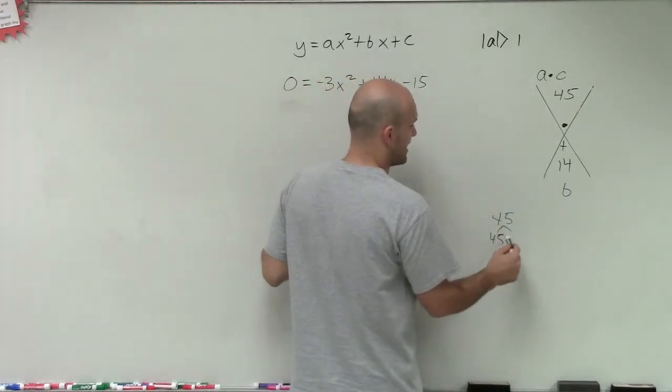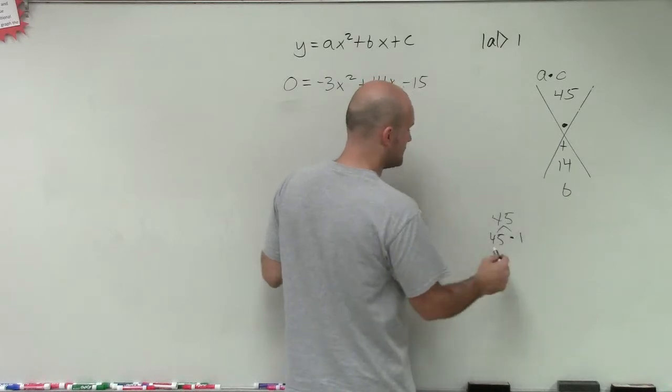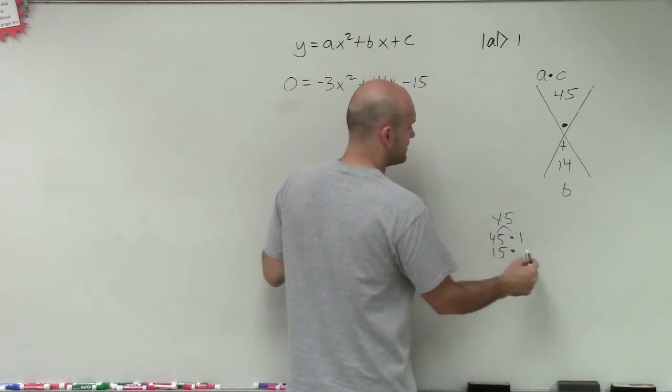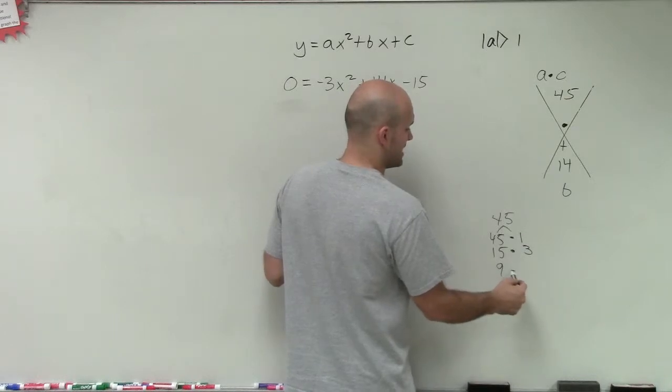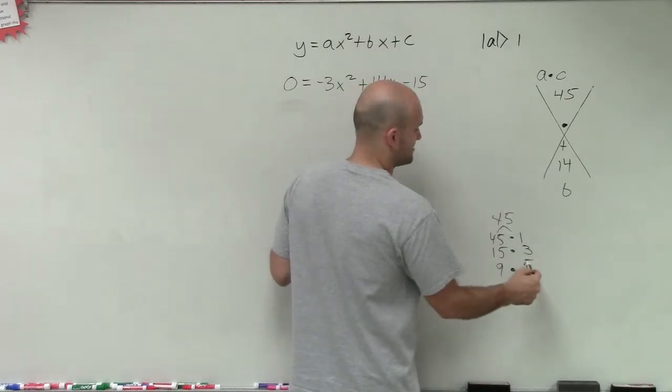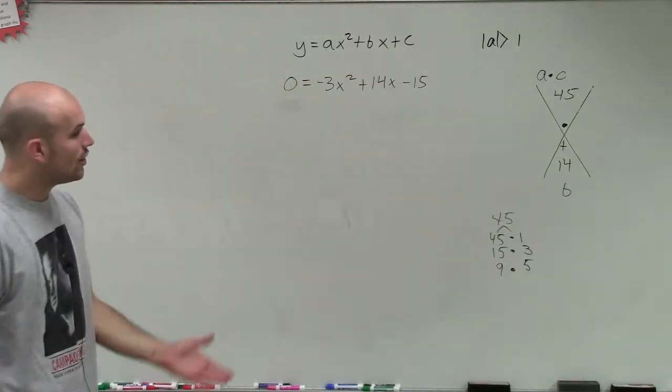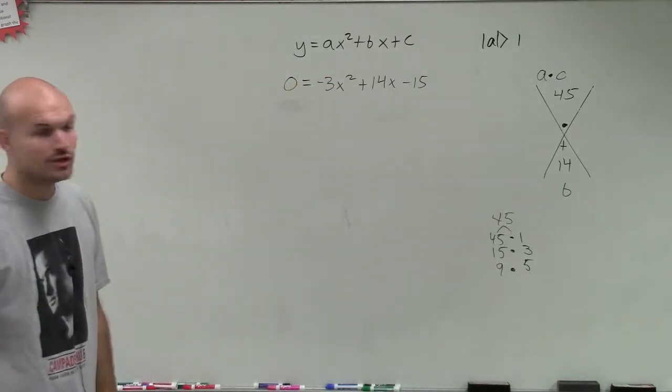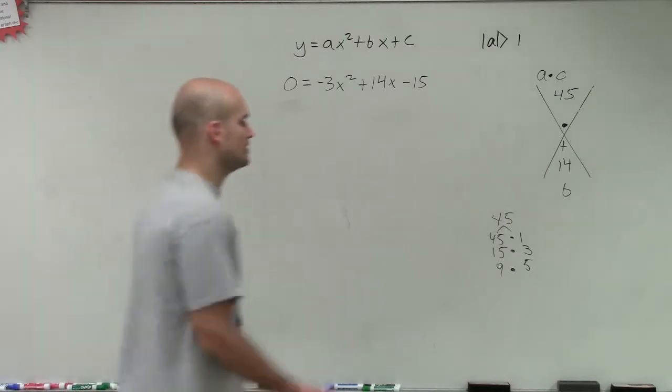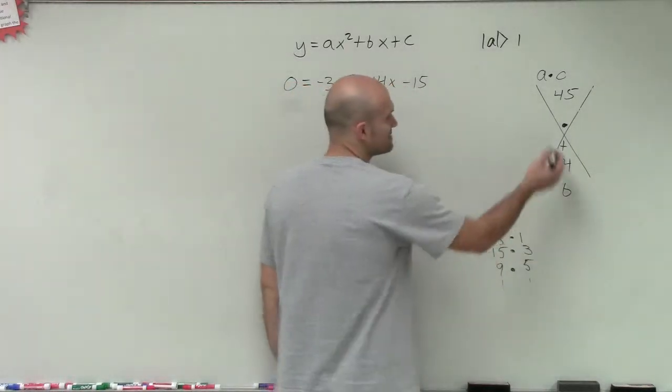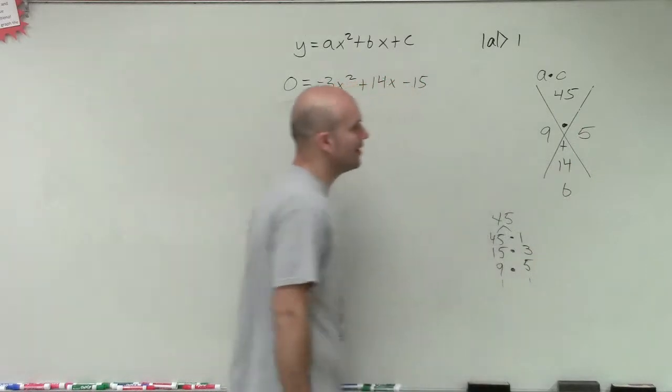So we could have 45 times 1, we could do 15 times 3, we could do 9 times 5. And I believe that's everything we have. So out of all those factors, what are the only two that add up to give us 14? Well, you can see that 9 and 5 is going to be our answer.